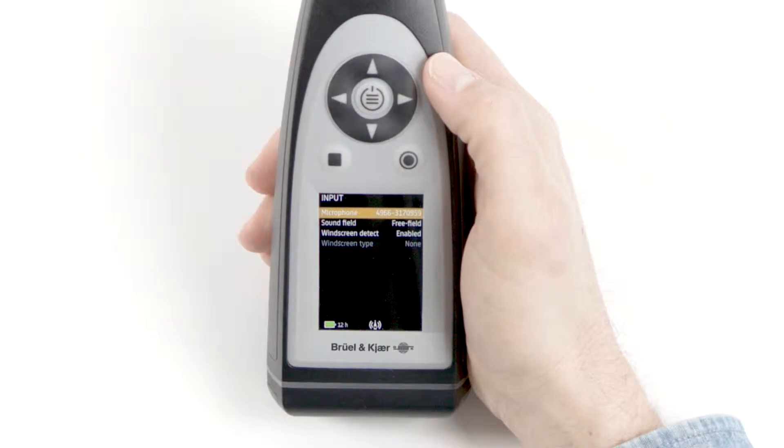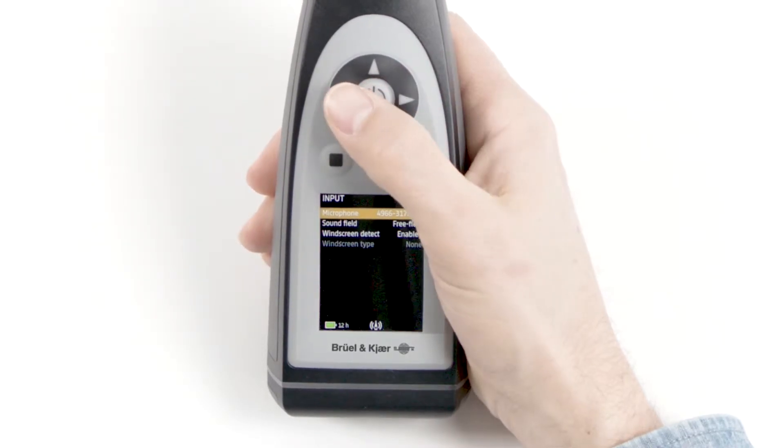Under input, we can choose the microphone that we're measuring with, whether we're measuring in a free or diffuse field, and whether we are correcting for the influence of the windscreen. In most cases, it's best to leave these on the default settings.